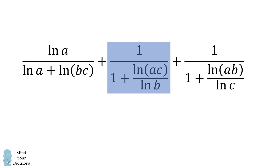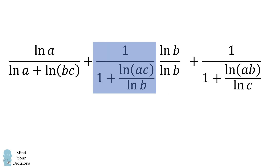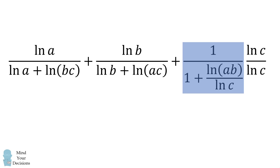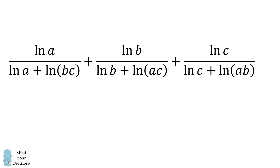We'll do a similar thing for the second fraction — multiply it by the natural log of B divided by the natural log of B. The numerator becomes the natural log of B, and the denominator becomes the natural log of B plus the natural log of the product AC. The third term will multiply by the natural log of C divided by the natural log of C. The numerator becomes the natural log of C, and the denominator becomes the natural log of C plus the natural log of the product AB.